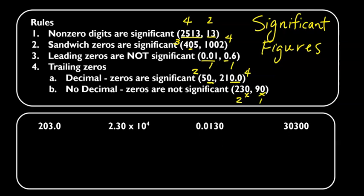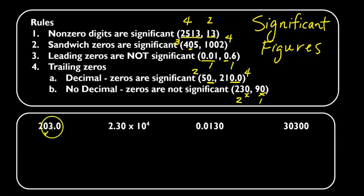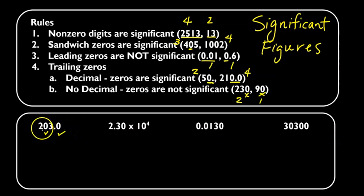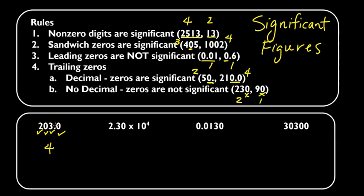Let's take a look at the numbers at the bottom. 2,030.0 — this first zero is a sandwich zero, so that is significant. The last zero is a trailing zero and it does have a decimal, so that is also significant. So we have 1, 2, 3, 4 — four significant figures. Remember, all non-zeros, the 2 and the 3, are non-zero digits so they are also significant.